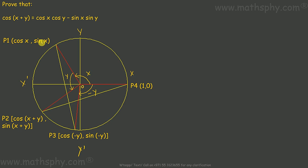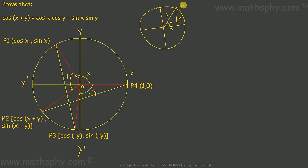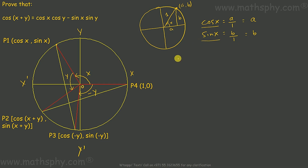This point here we call P1, and its coordinates would be (cos x, sin x). Why are these coordinates cos x and sin x? Suppose we have a unit circle — the radius is 1. The point is (a, b). The value of cos x here is a over 1, which is a, and sin x is b over 1, which is b. So in place of a we write cos x, and in place of b we write sin x.